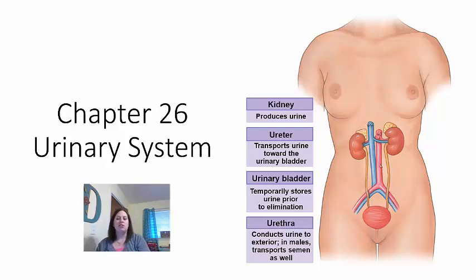Alright guys, now we're going to be looking at chapter 26, which is the urinary system. When we look at chapters 23, 24, and 26, these are all areas where waste gets removed in different ways. In the lungs, the respiratory system, we get rid of gas waste as carbon dioxide. In the digestive system, we got rid of solid waste from food. And now in the urinary system, we're going to see where we get rid of liquid waste.